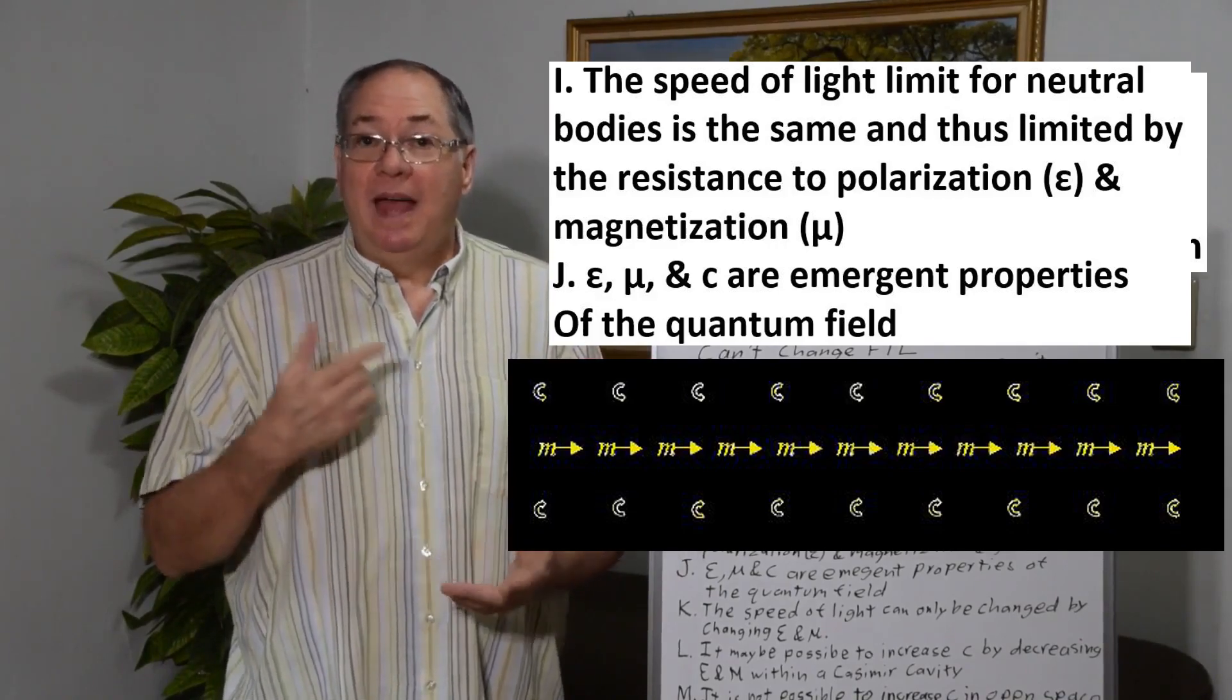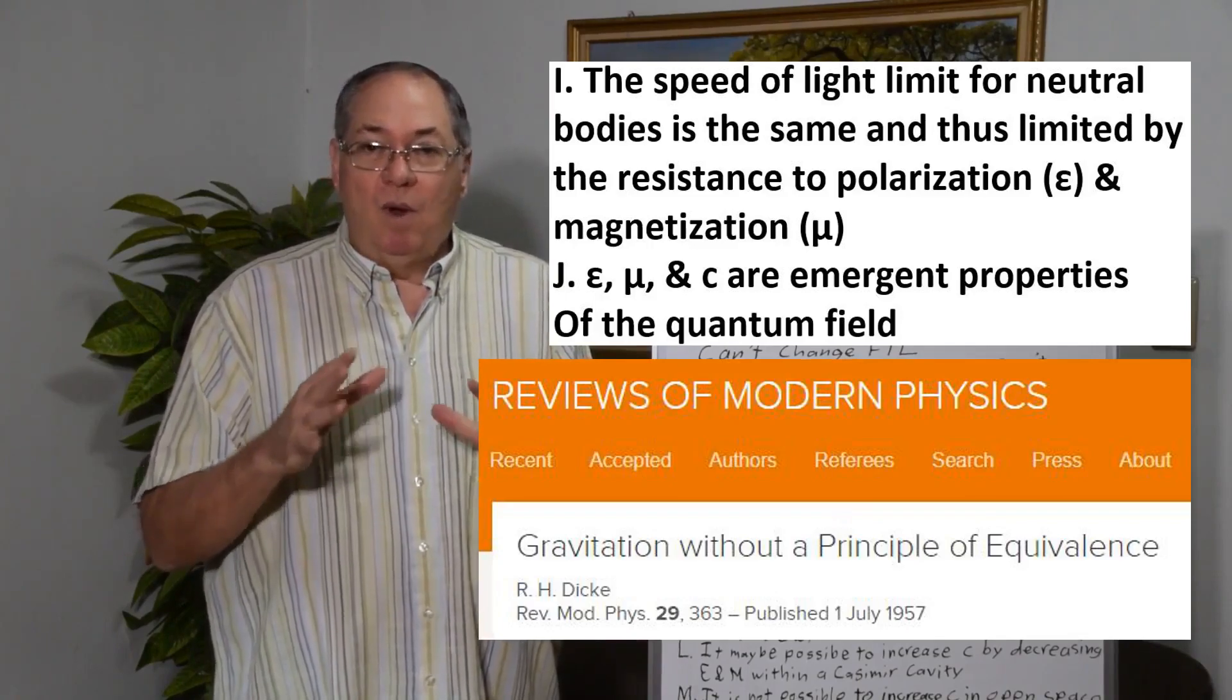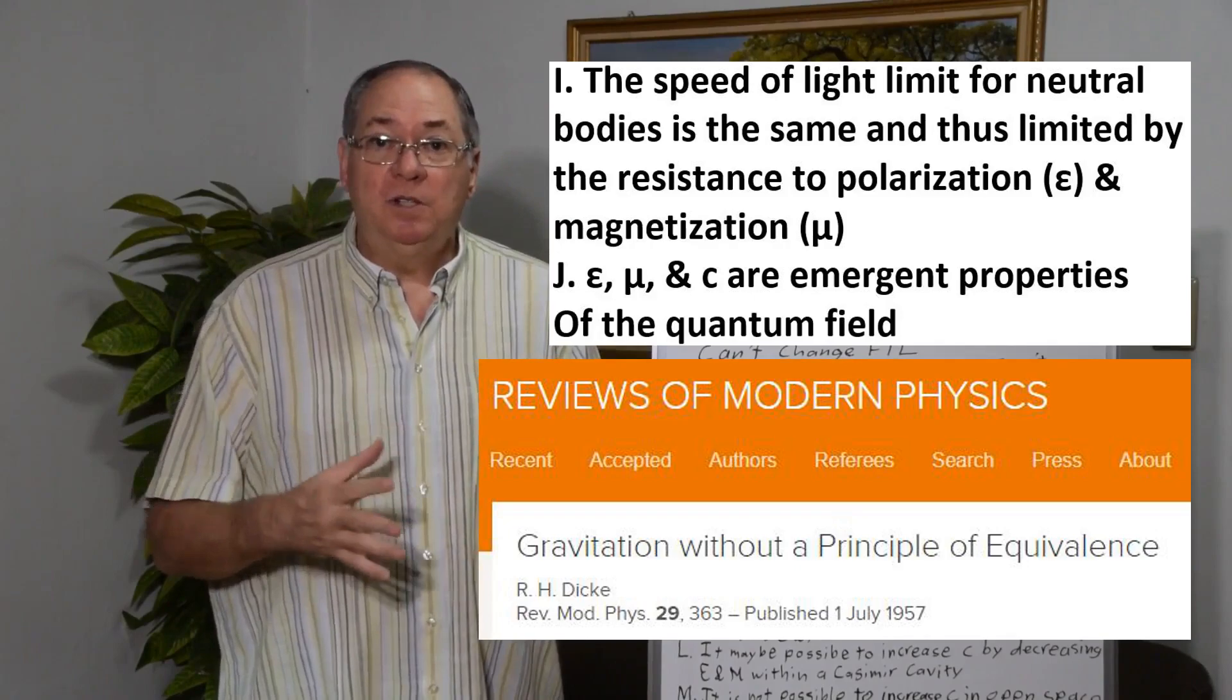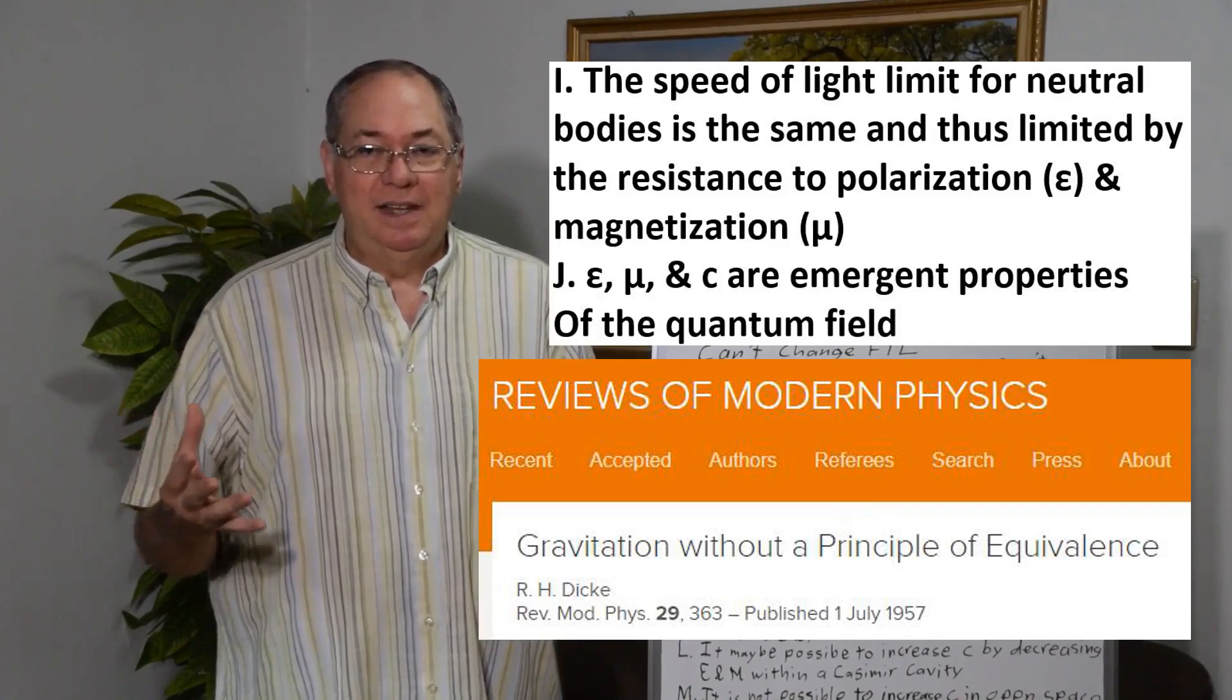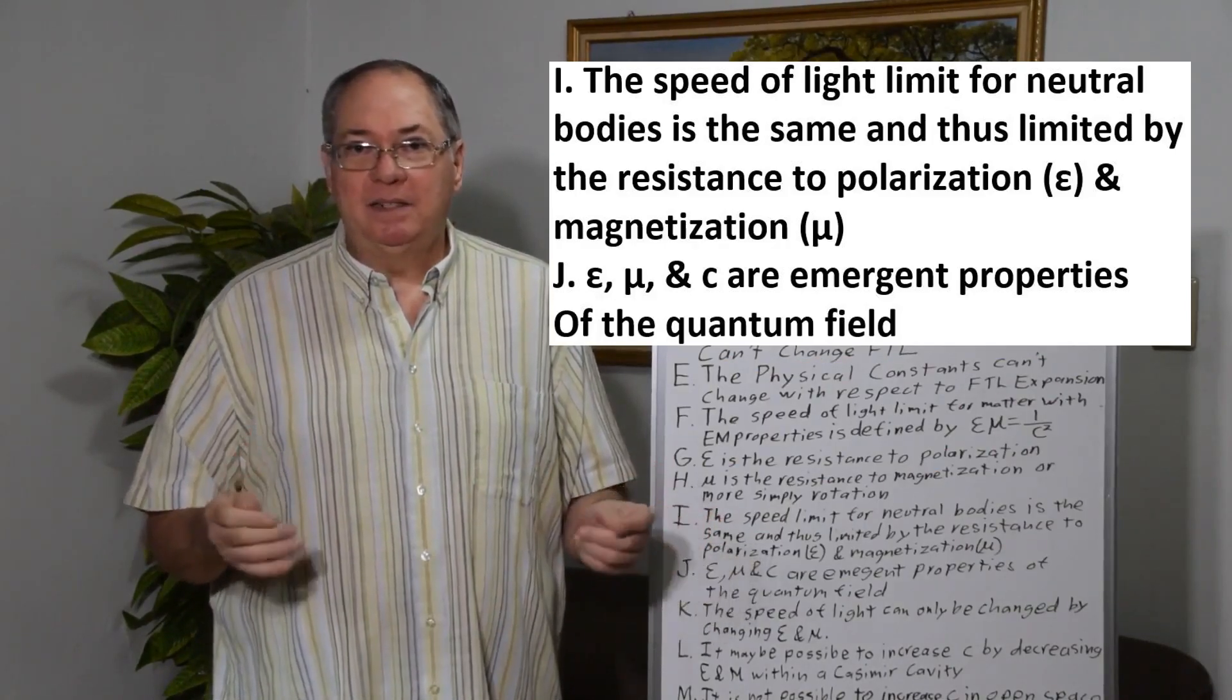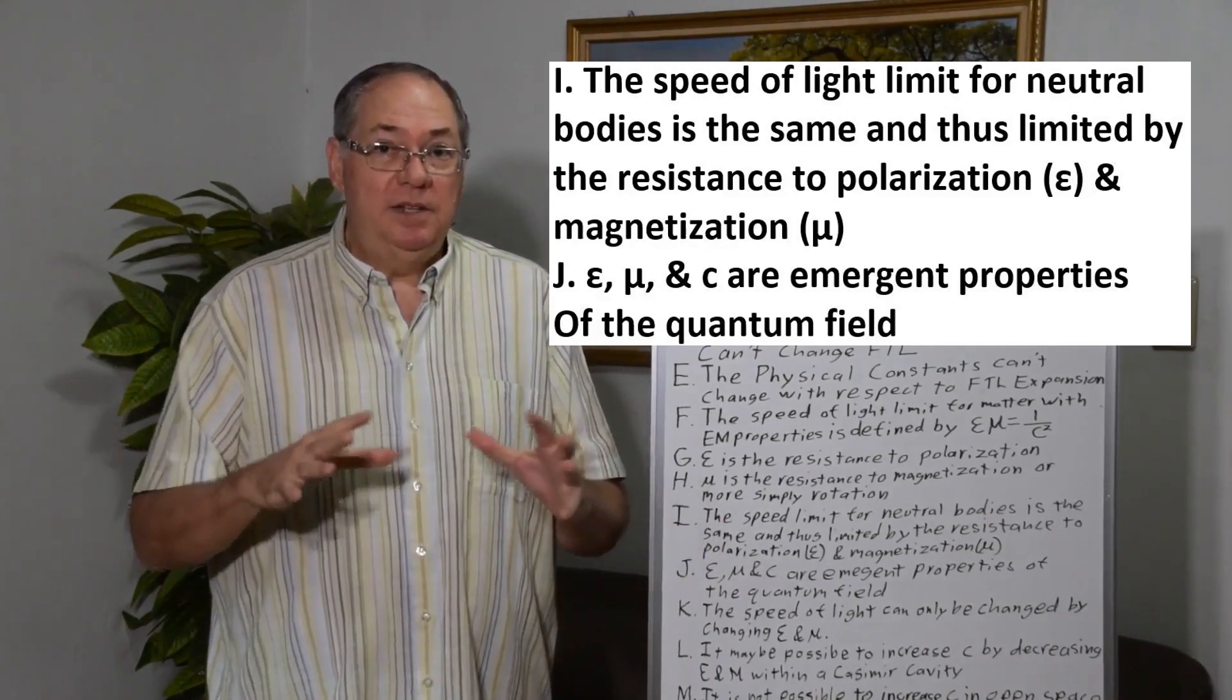And Dicke figured out in '57 that if you have a quantum field that's a polarizable field, that permittivity, permeability, and consequently the speed of light are emergent properties of the field. And I've gone on to show that every physical constant is in that case an emergent property of the quantum field. None of the physical constants are magic. No one waved their magic wand, went poof, there's this physical constant. They're all emergent properties of the quantum field or interrelated to the quantum field in such a way that they're fixed within the range of relativistic changes, as I said.